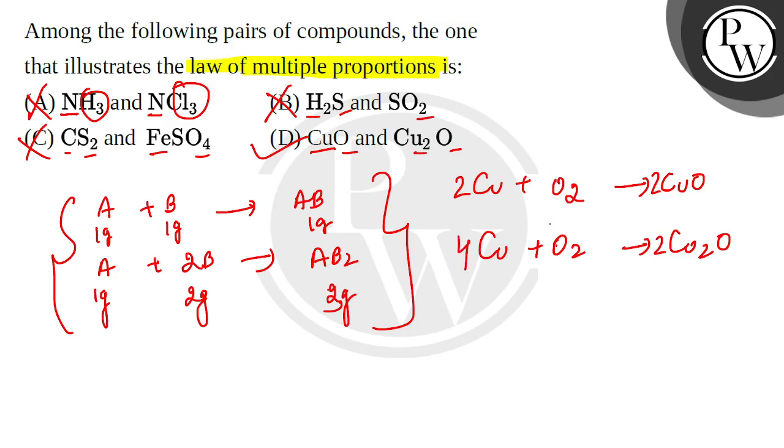So now, let's see. If I know copper, that is 63.5, so it is 2 into 63.5, combined with 32 grams of oxygen. Here, 4 into 63.5 grams combined with 32 grams of oxygen.